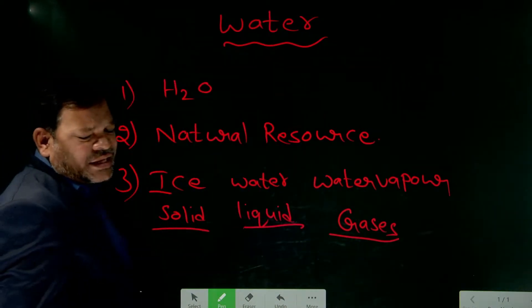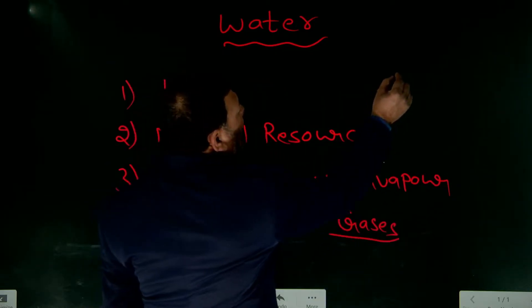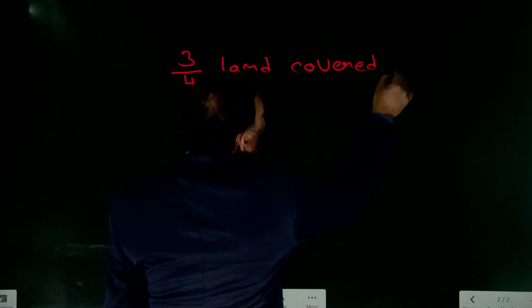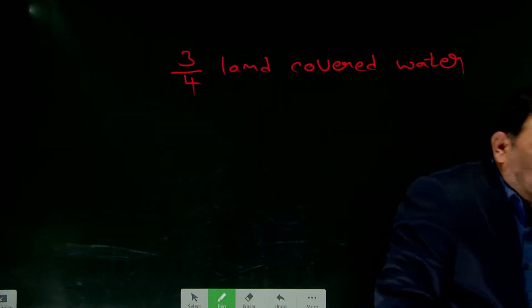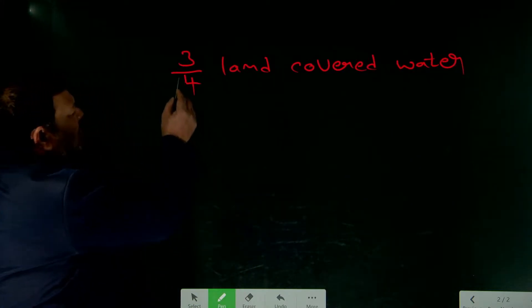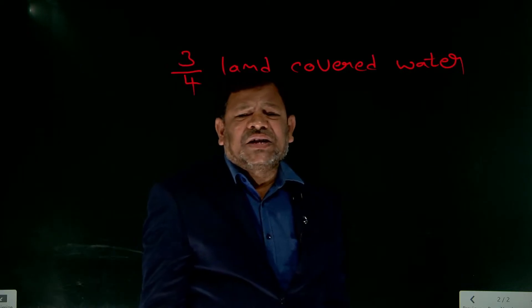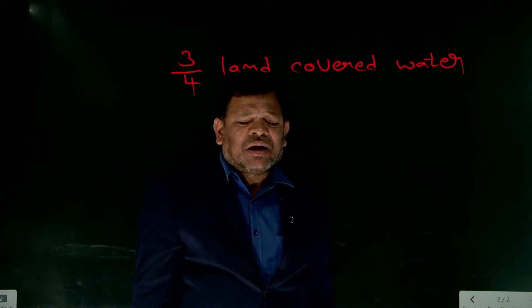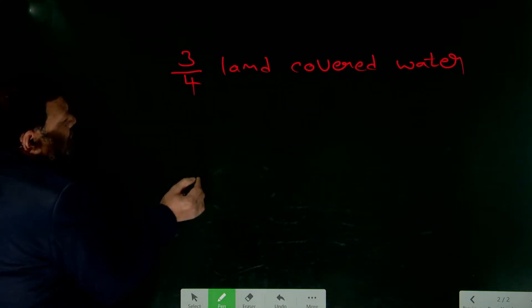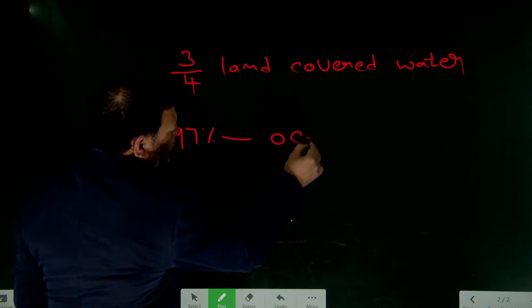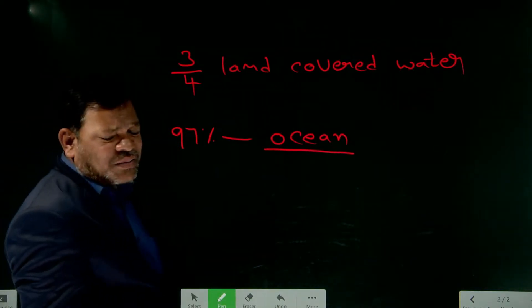On Earth, three-fourths of the land is covered with water. Water is present especially in wells, rivers, and oceans. 97% of the water is present in the oceans.